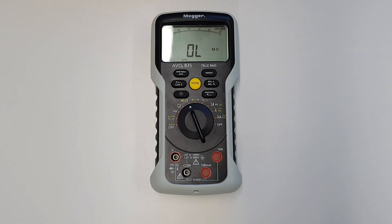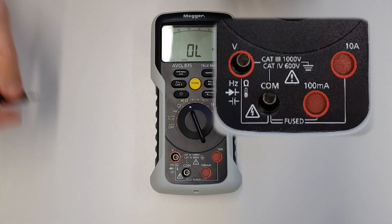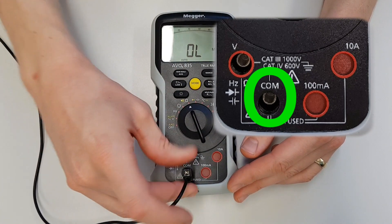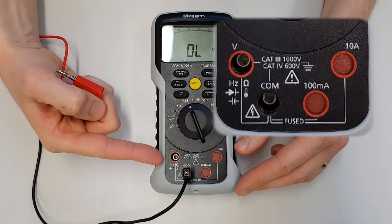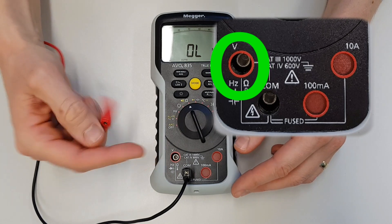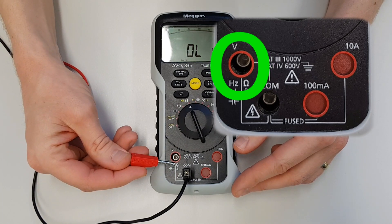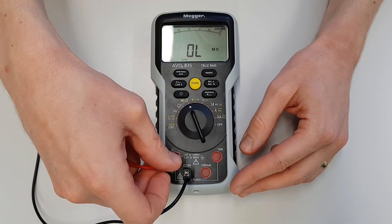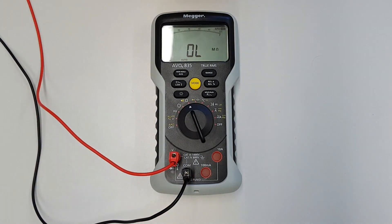So we'll make sure we've got the leads in the right place. We always have a lead in the common, so we'll pop our black lead into the common there. Then we've got our voltage terminal here, which is also marked with the little Omega symbol again symbolizing resistance. So we'll plug our second lead in there. Now we've got the meter set up and ready to go, we'll bring in our Loctronix board, plug some resistors in, and have a look at what values we're getting.